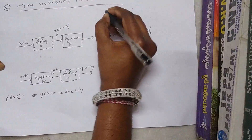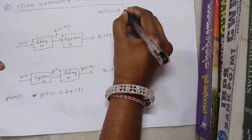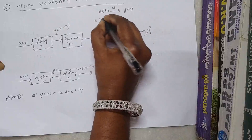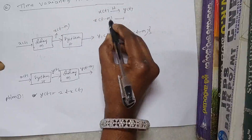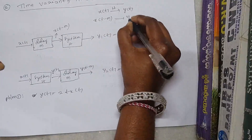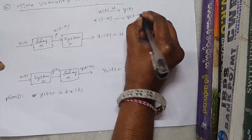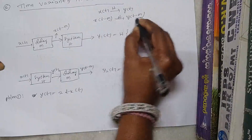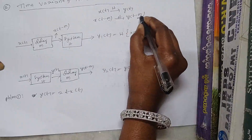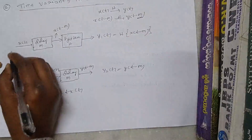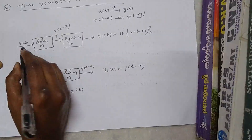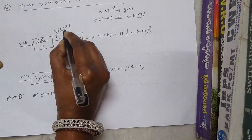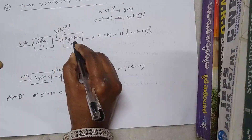The next classification is time invariant and time variant. Time invariant means: for input x(t), the system response is y(t). If the input is delayed by an amount m, the same delay must be reflected in the response with the same amount. If the input is delayed by m units, the output must also be delayed by m units. So x(t-m) is passed through the system.